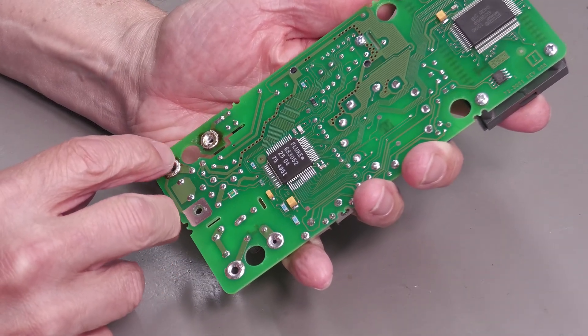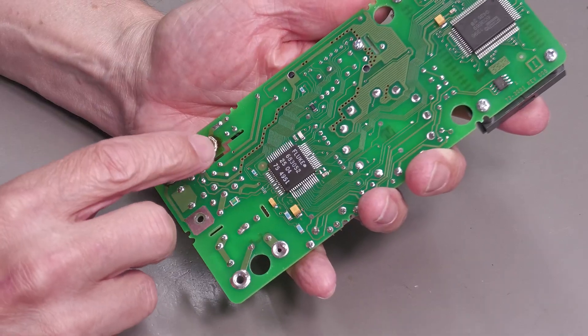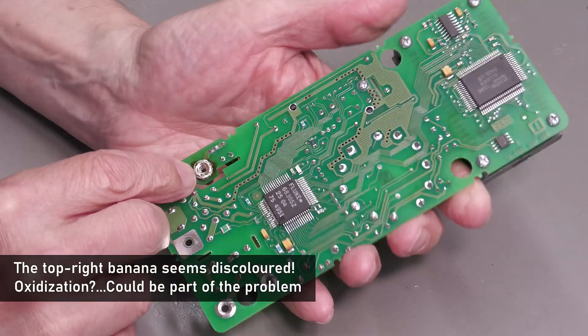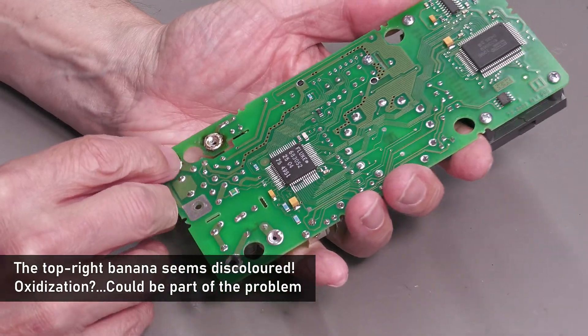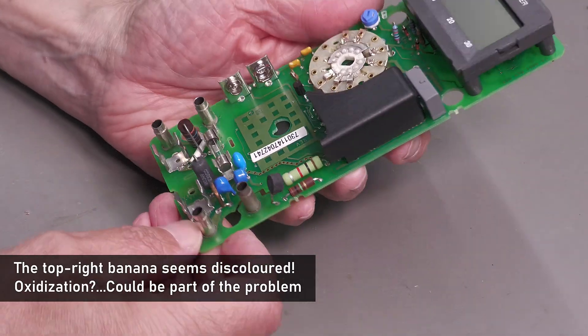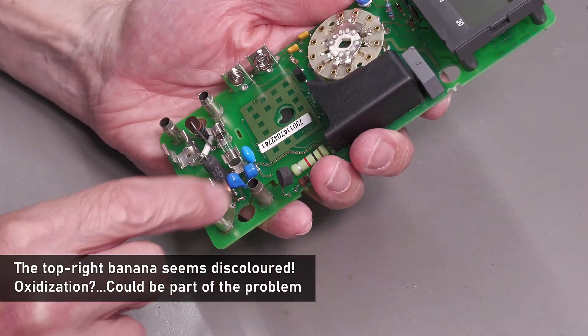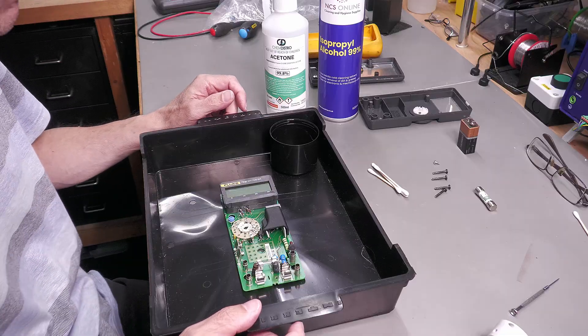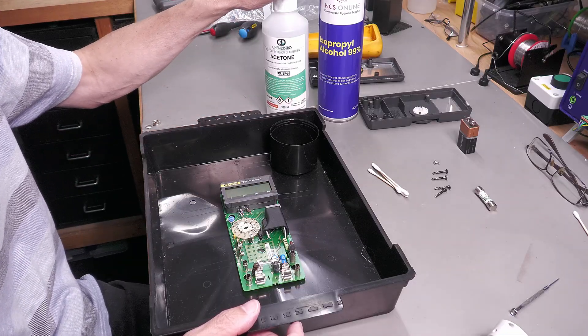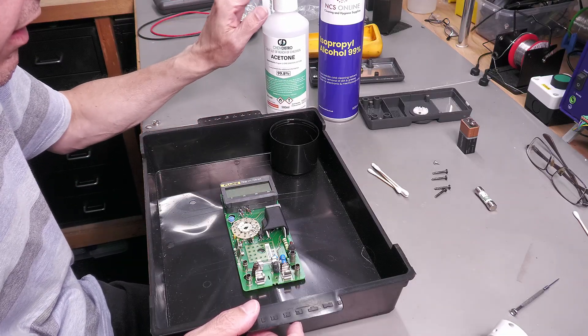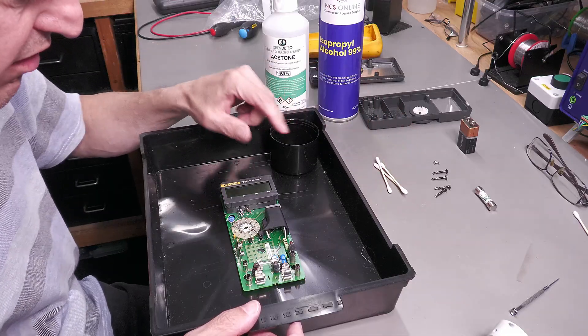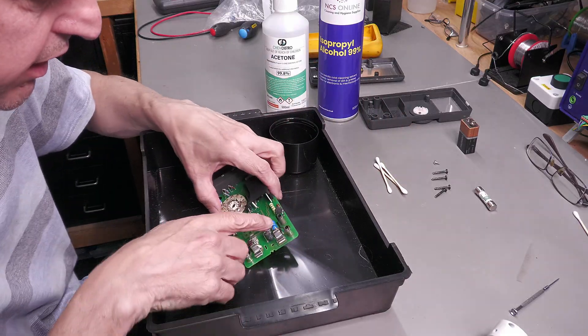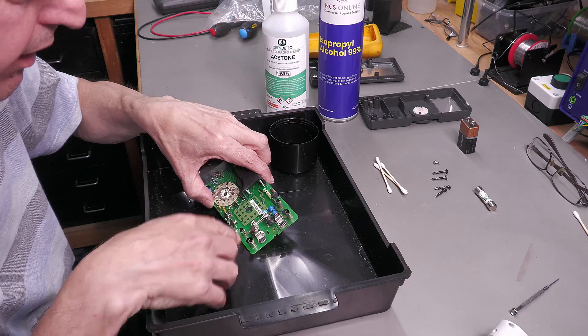I think this board could probably do with a cleanup and perhaps a resolder on those bananas. And I'll try and get down inside it as well. Okay some tools of the trade. Got some isopropyl alcohol, got some acetone if I need it, and some cotton buds. So first things first I'm going to try and clear out the insides of those bananas.